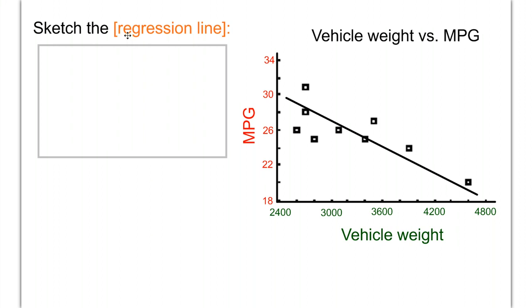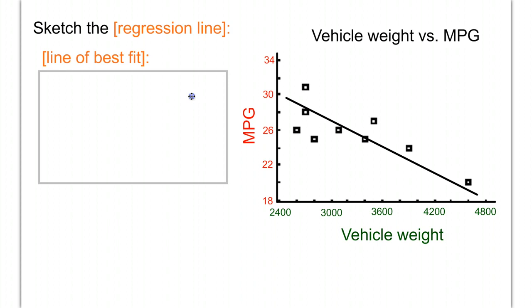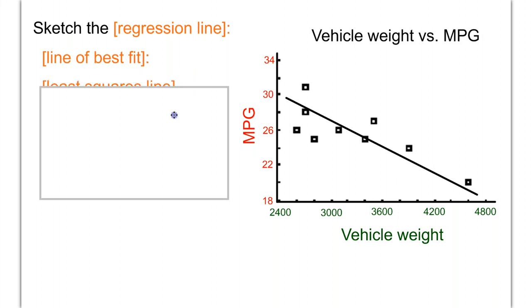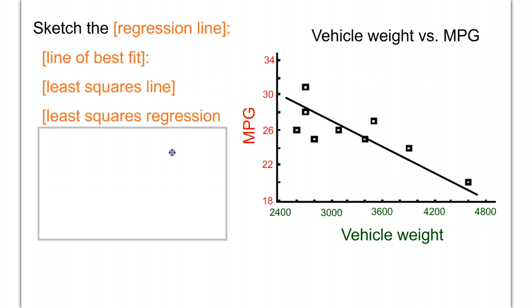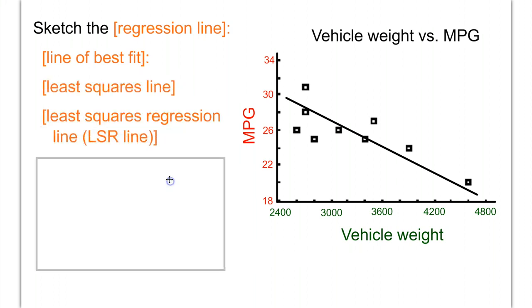The regression line has a few names. You could call it the regression line, the line of best fit, the least squares line, or the least squares regression line (LSR line for short). There are lots of different terms typically used. Just be aware that if you see any of these, they're all talking about the same thing: the line that fits your data best.